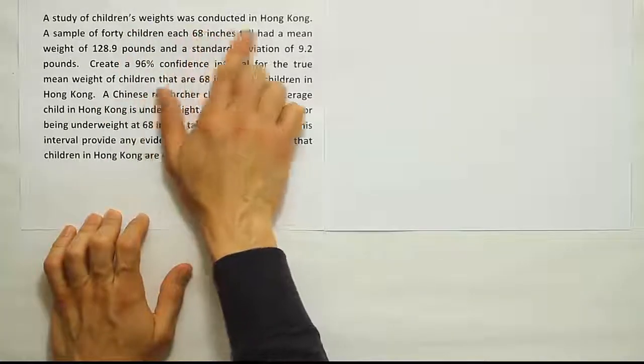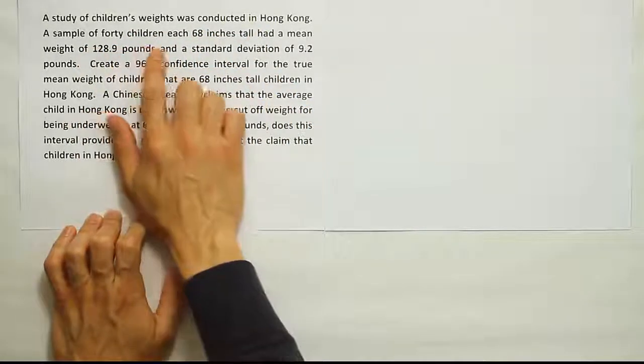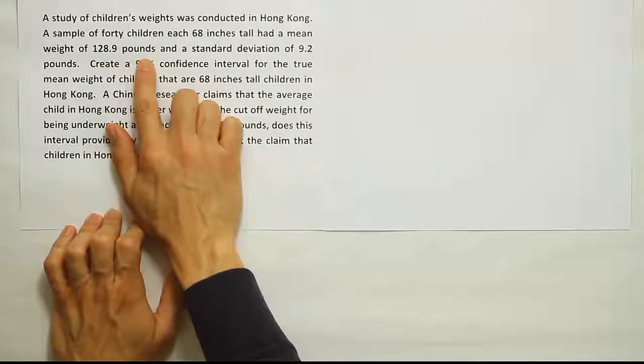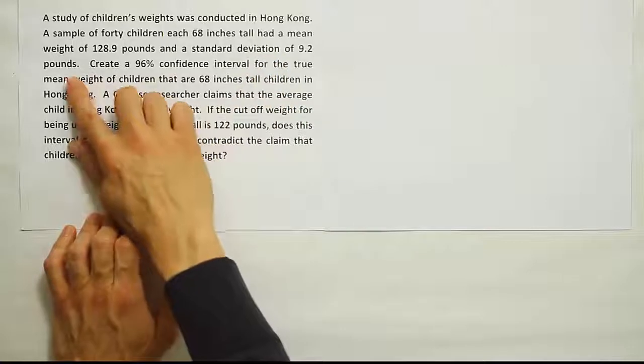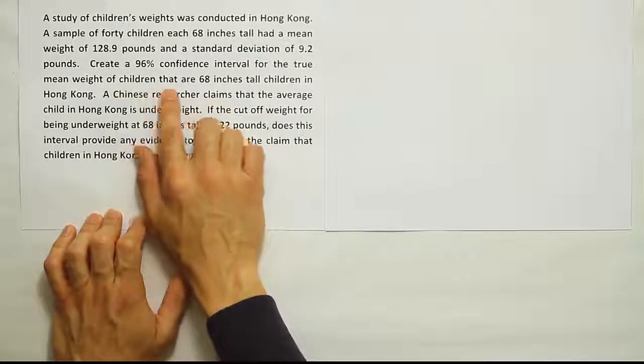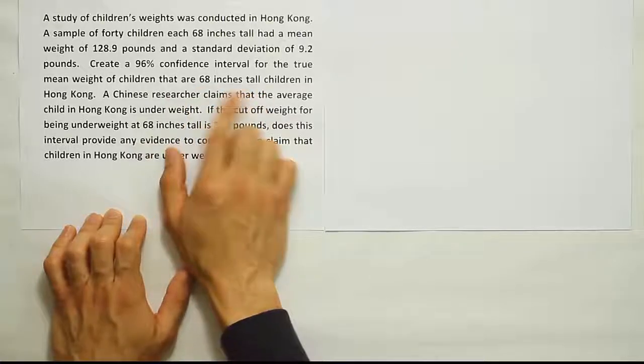A study of children's weights was conducted in Hong Kong. A sample of 40 children, each 68 inches tall, had a mean weight of 128.9 pounds and a standard deviation of 9.2 pounds. Create a 96% confidence interval for the true mean weight of children that are 68 inches tall in Hong Kong.